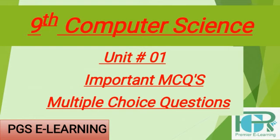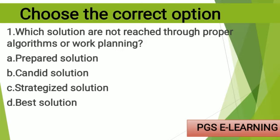Assalamu alaikum viewers, hope you all are fine. Today we will discuss 9th computer science unit number one important multiple choice questions. So let's start. MCQ number one: which solutions are not reached through proper algorithms or work planning? Option A: prepared solution, Option B: candid solution, Option C: strategize solution, Option D: best solution.